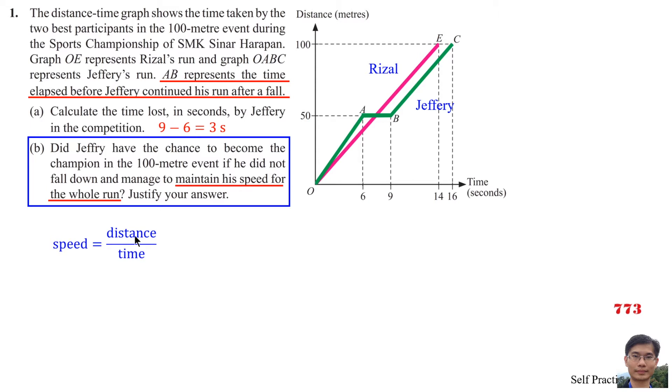Speed is equal to Distance per Time, which equals the Gradient of OA. That is equal to 50 divided by 6.